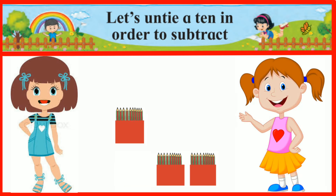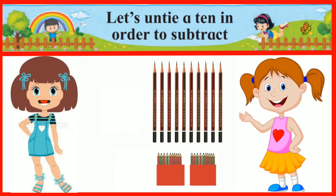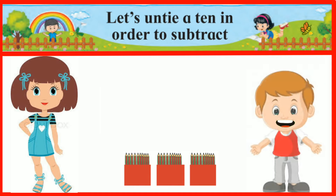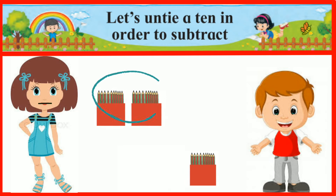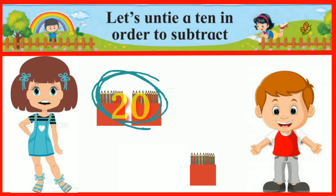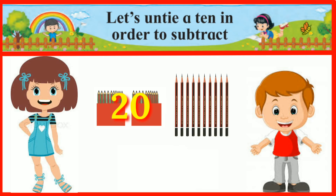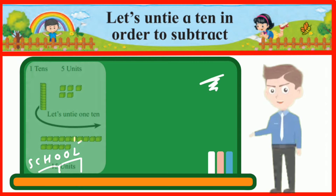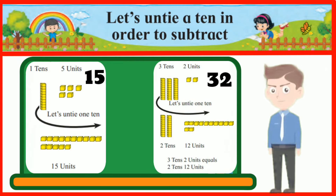I want 4 pencils — open one box, you will get 10, count 4 of them and take them. I want 25 pencils — take two boxes. The total number of pencils in two boxes will be 20. Untie the 10 pencils in the remaining third box, take five pencils out of it. 20 and 5 became 25 pencils.